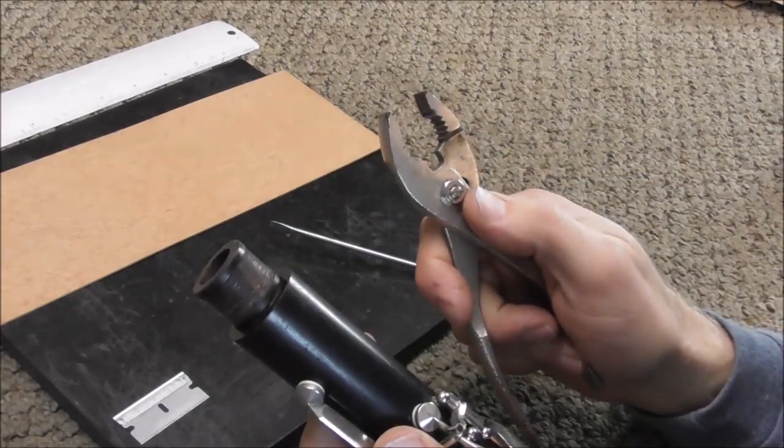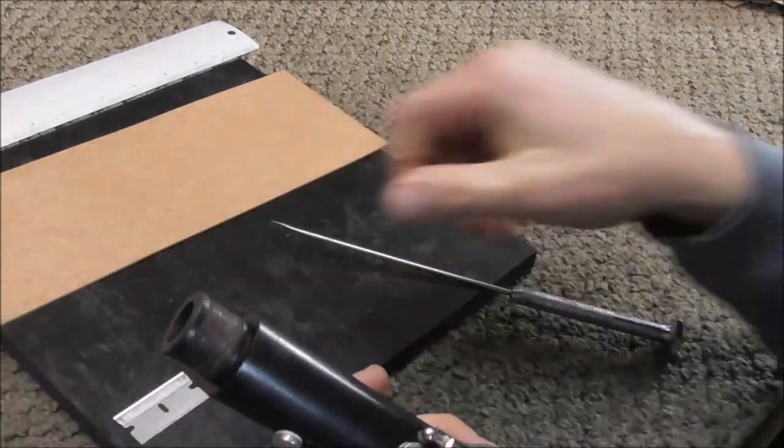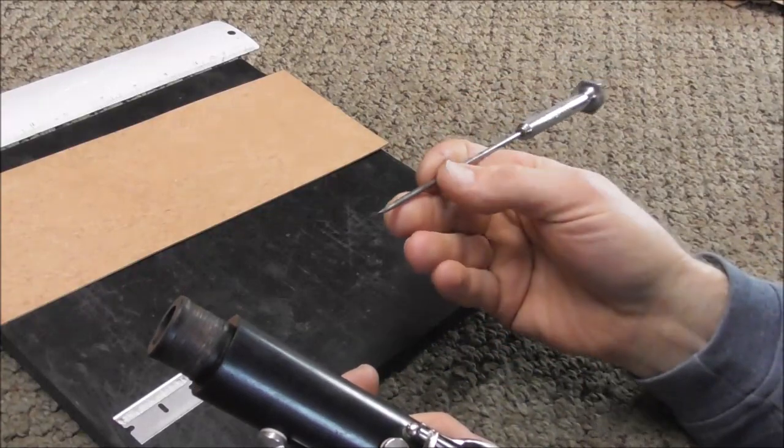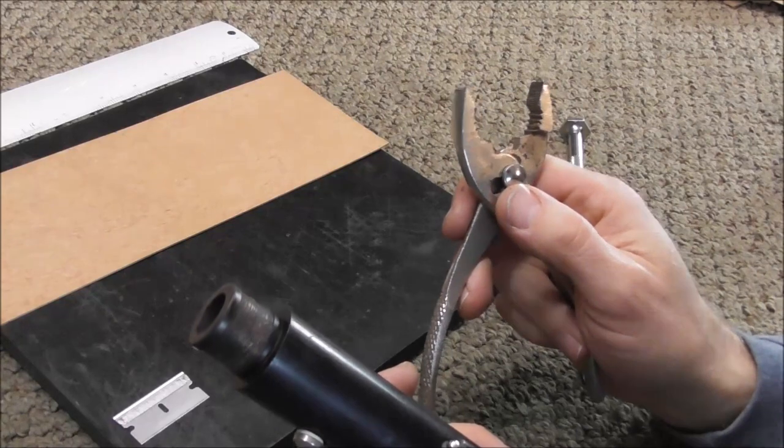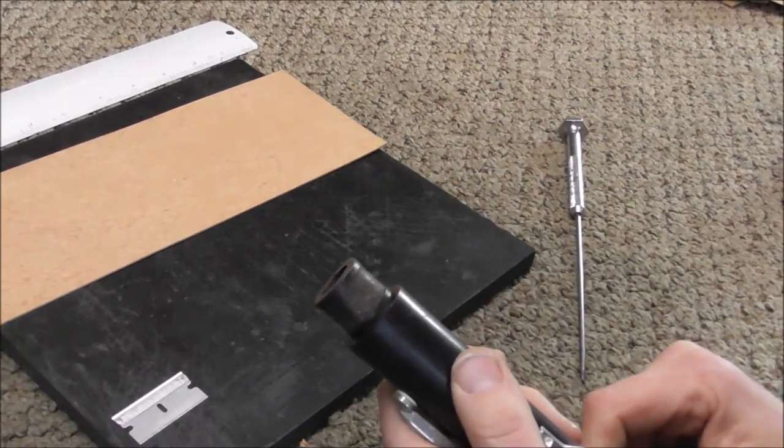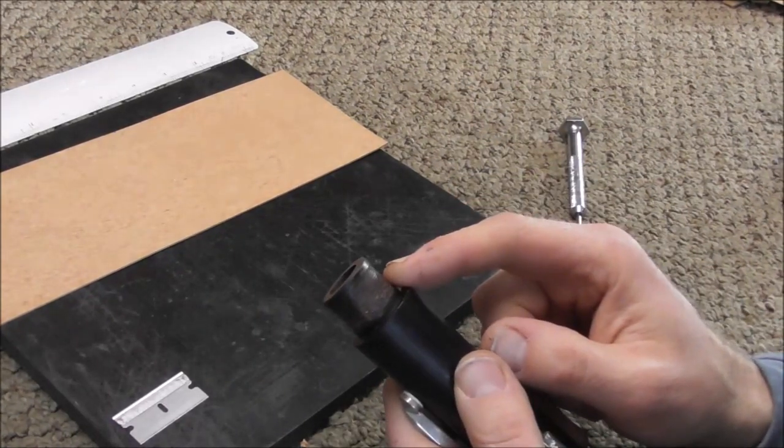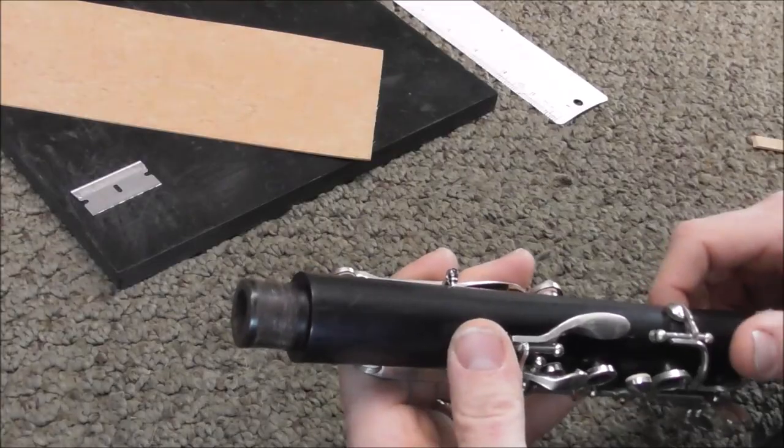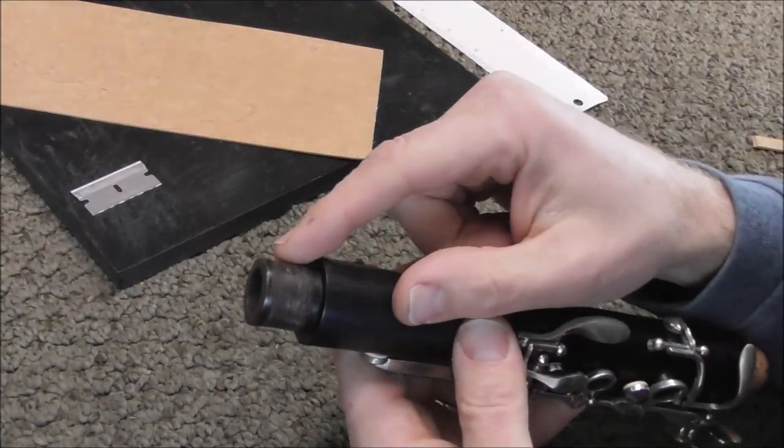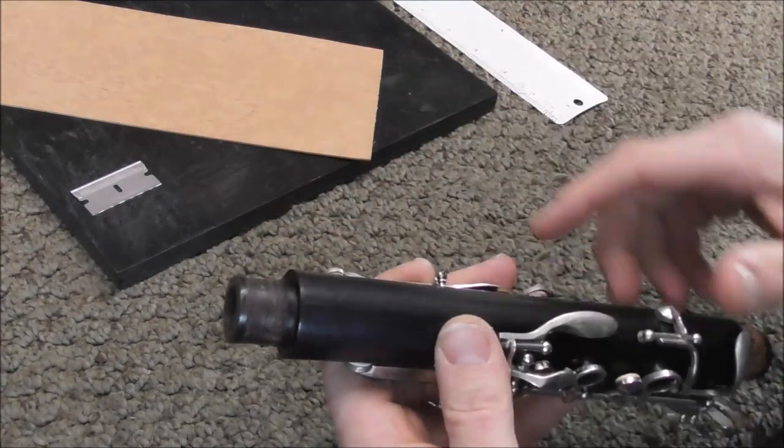However if you're not comfortable using the pliers you can scrape it off with a screwdriver, but actually the pliers is safer if you are careful when you do it. Also Ferree's does make a tool that can strip off the tenon corks and you can use that too, but I do not own one of those. After you're done removing the cork, clean off any excess grease or cork or glue that's on the tenon.